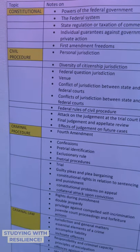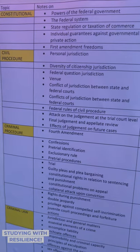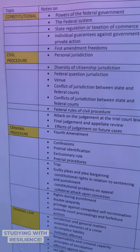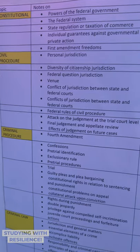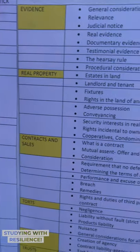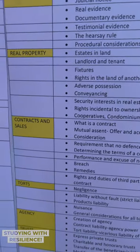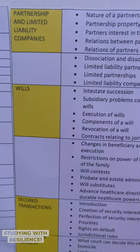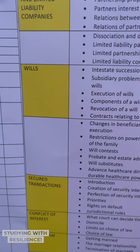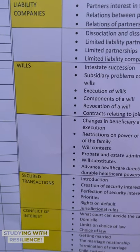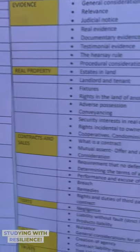I was feeling so overwhelmed about studying, so I made a table. This table is based on the Convizer Mini Review. It covers constitutional law, civil procedure, criminal procedure, criminal law, evidence, real property, contracts and sales, torts, agency, trusts, corporations, partnerships and limited liability companies, wills, secured transactions, conflicts of interest, and family law.